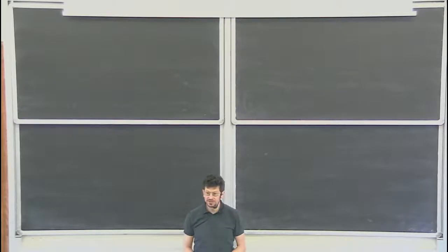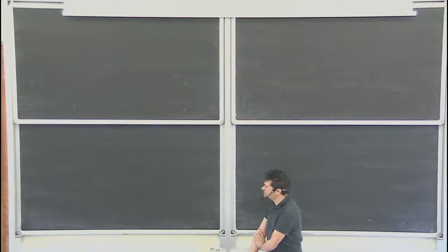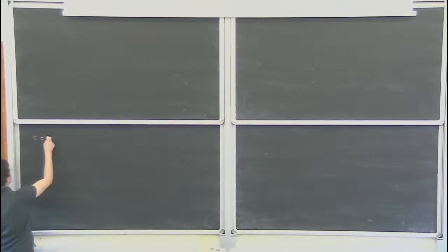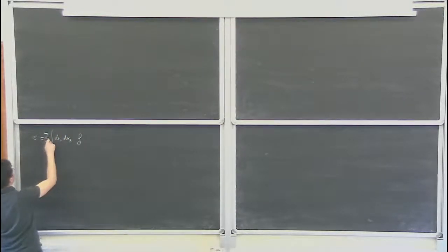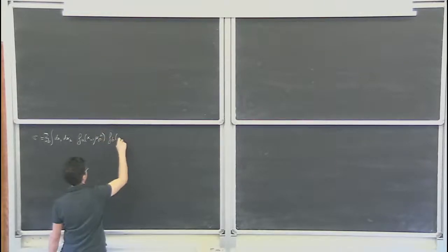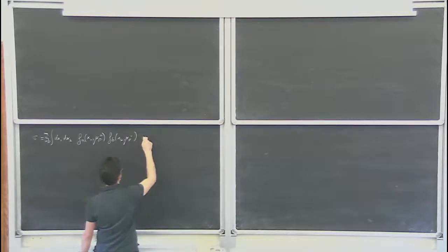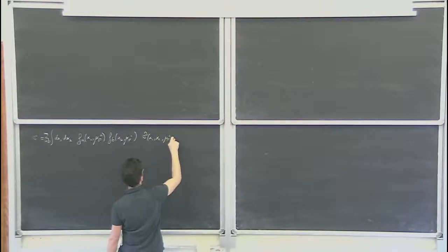We were yesterday discussing proton-proton collisions. One thing I forgot to mention yesterday — I had a few questions about that afterwards — the math formula is essentially writing down the cross-section as a sum over incoming flavors, PDFs for those two guys, and some partonic-level cross-section which depends potentially on alpha-S.